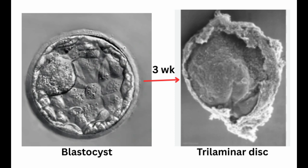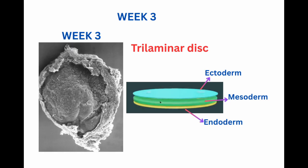At the third week of embryonic development, the human blastocyst is transformed into a tri-laminar disc, or three-layer disc, by a process called gastrulation. The tri-laminar disc has three primary germ layers: the outermost ectoderm, the innermost endoderm, and mesoderm in between — and this never looked like a human baby.